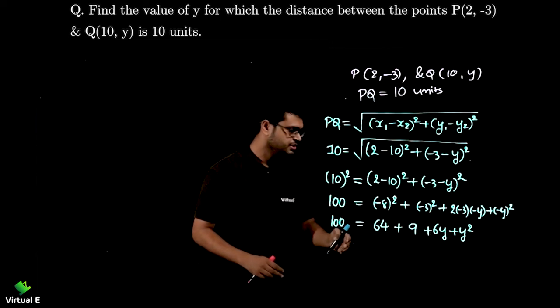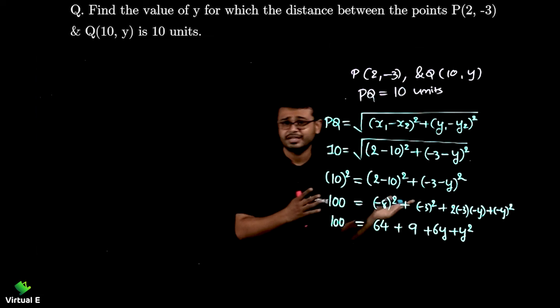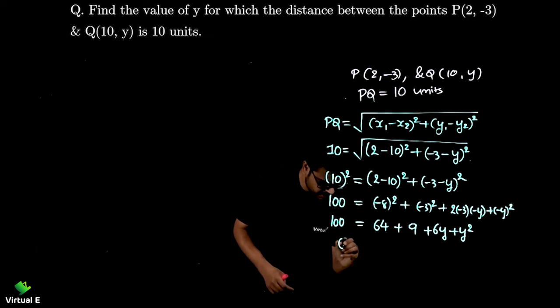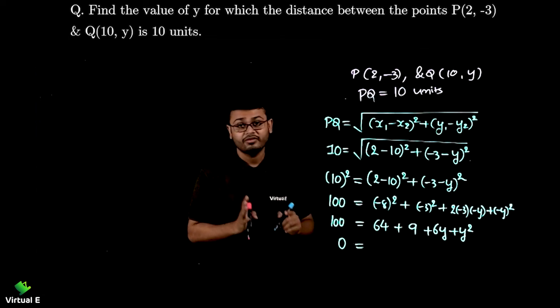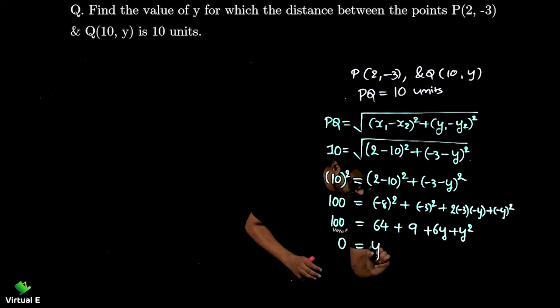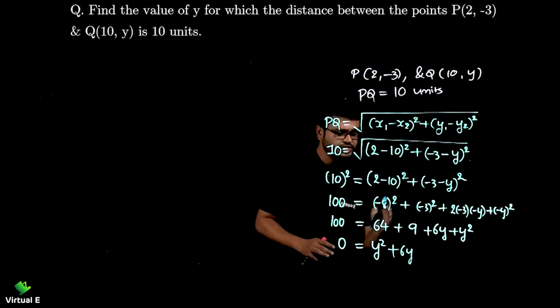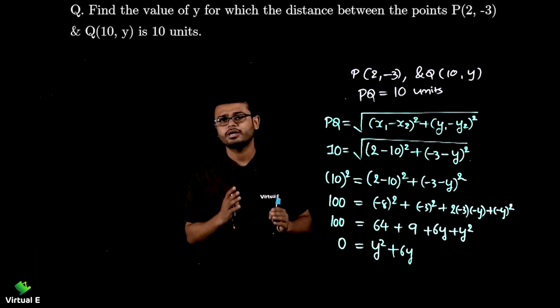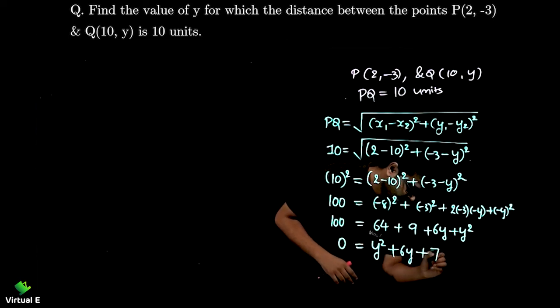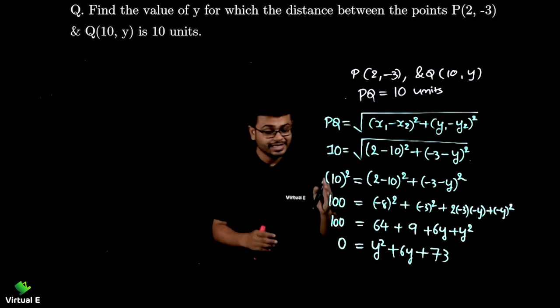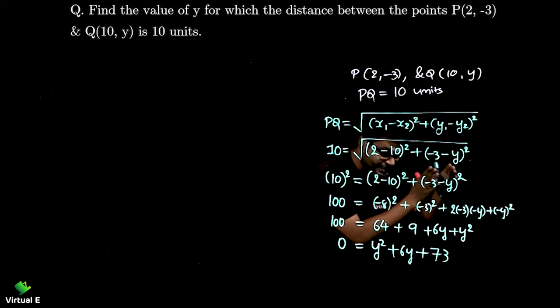Let's shift this 100 over that side because y² is there, variables are there. Let's shift. Here it will be 0 is equal to let's write in proper standard form first of all. y² first. Then plus 6y, then 64 and 9 that will give you 64 and 9, very simple calculation it is.